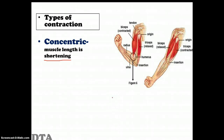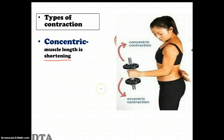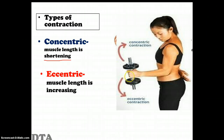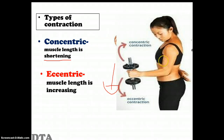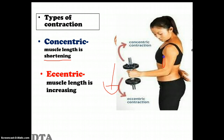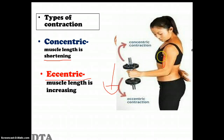We call the lengthening phase an eccentric contraction. Using a dumbbell as an example: the concentric contraction occurs where the bicep brachii is shortening, and then in the lowering phase we have the eccentric contraction of the same muscle, because it is slowing down the process of lowering. So the same muscle works concentrically when the angle decreases and eccentrically when the angle increases.